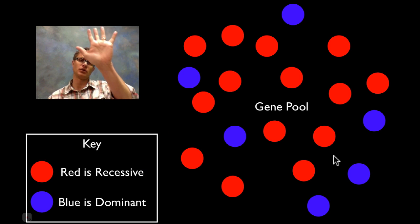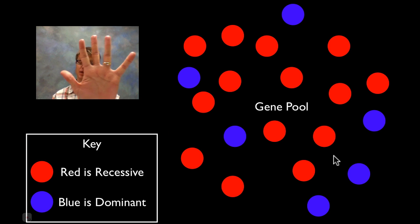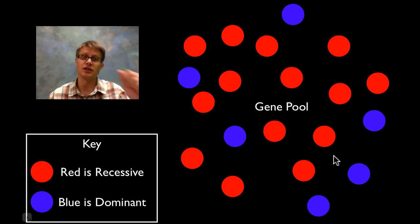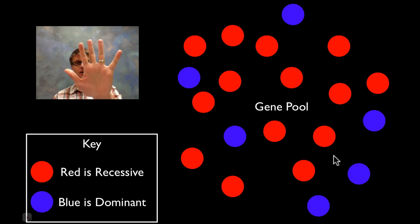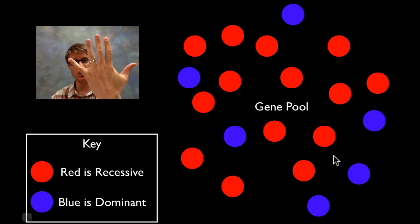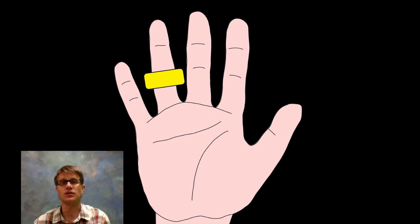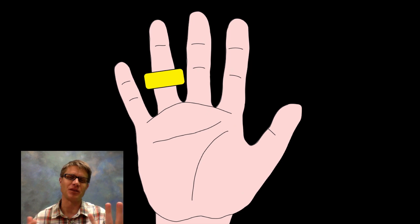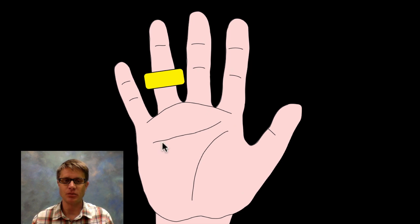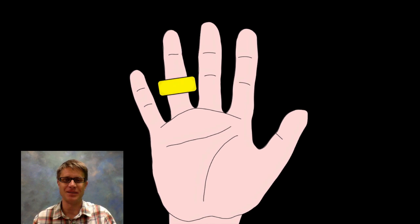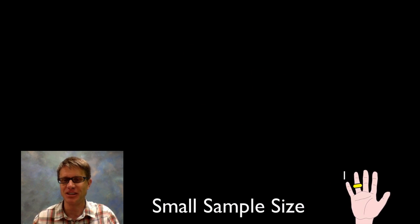With each generation, if we ever have a change in the allele frequency, then microevolution has occurred. There are only 5 things that cause microevolution. If you can remember all 5 of your fingers, you can remember the 5 causes of evolution. Look at your hand for just a second — this finger has a massive ring on it — and we're going to go through each of those.